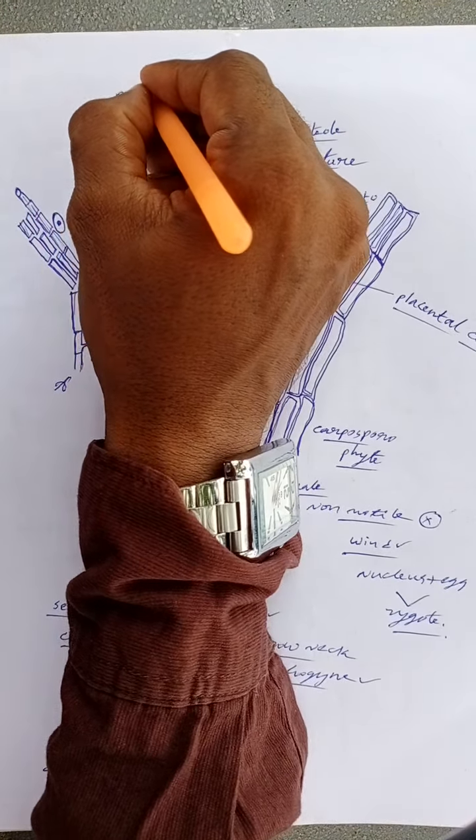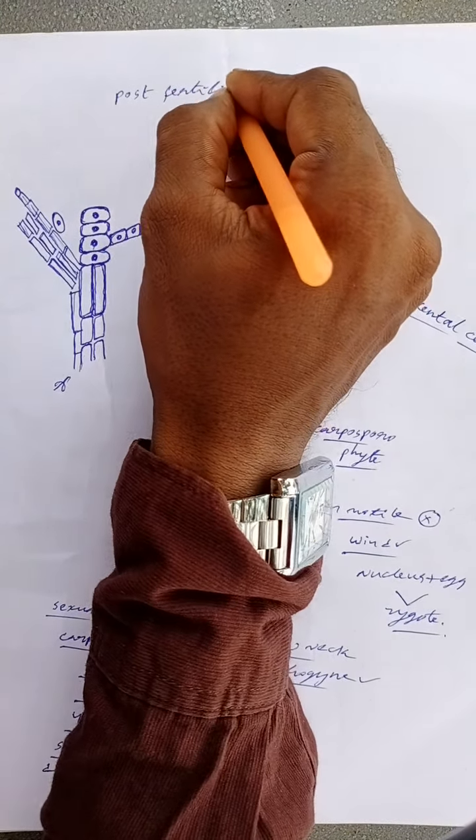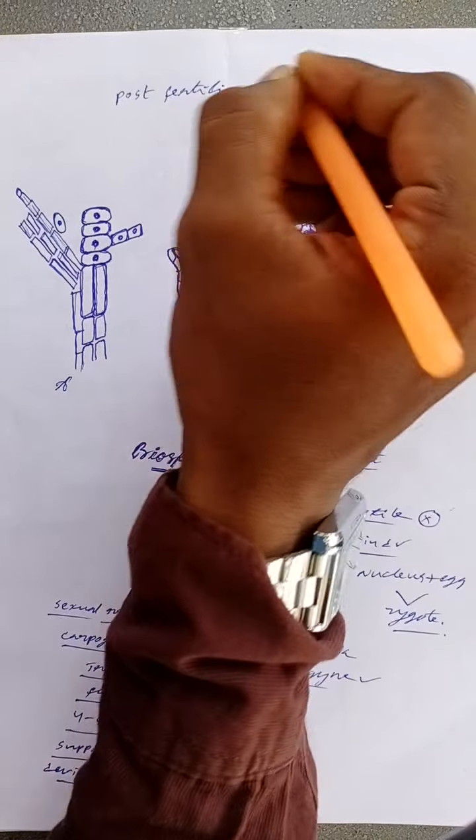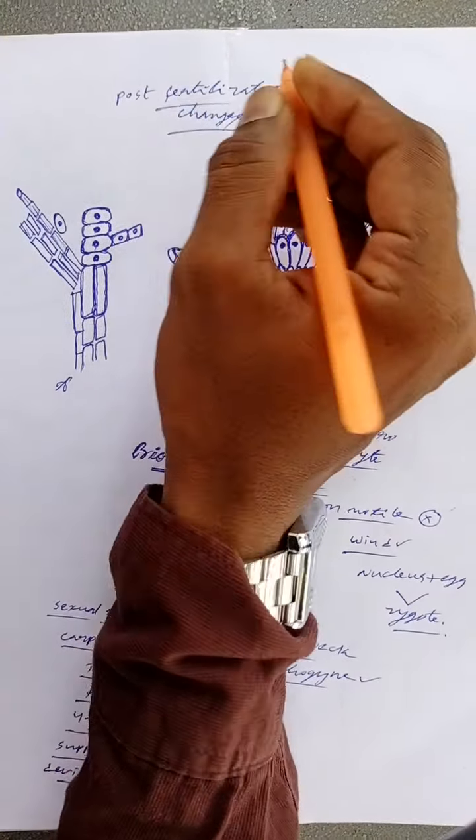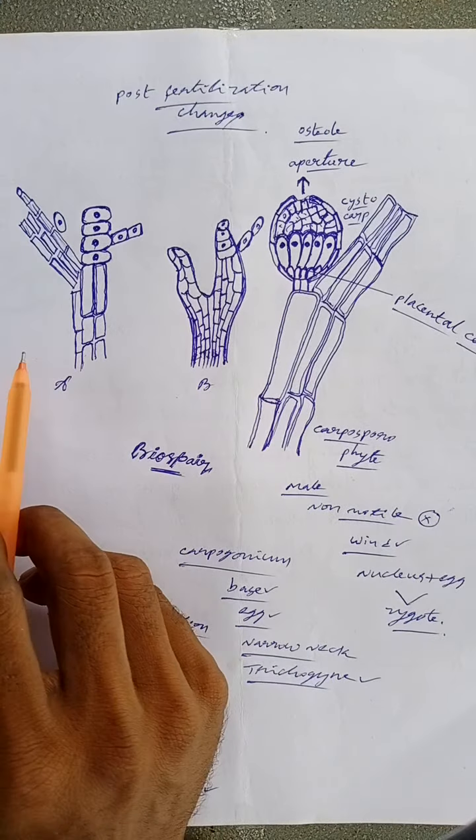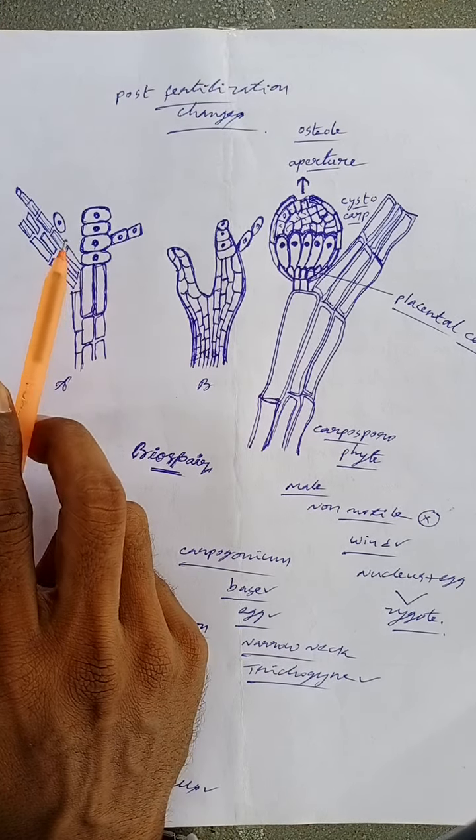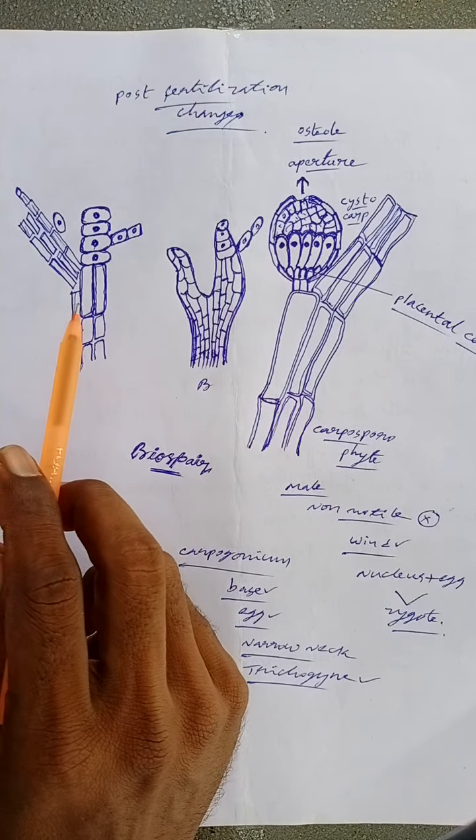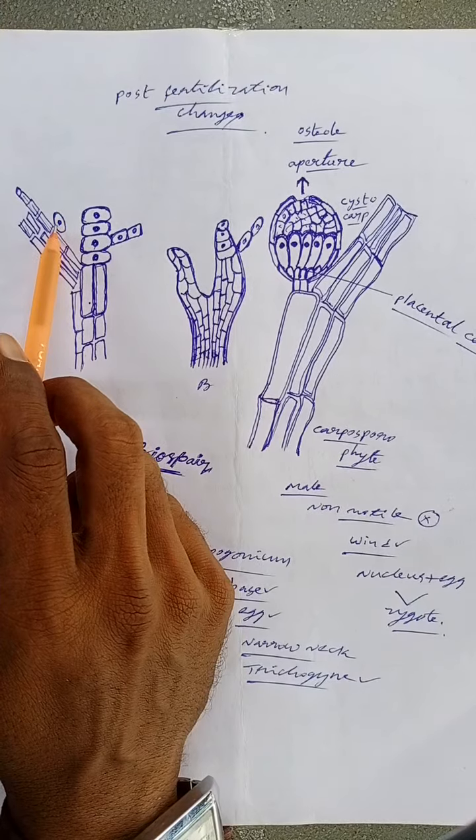The basal and lateral sterile initials divide to form two to four celled sterile filaments and four to ten celled lateral sterile filaments. The supporting cell divides transversely to form an auxiliary cell at its upper end.